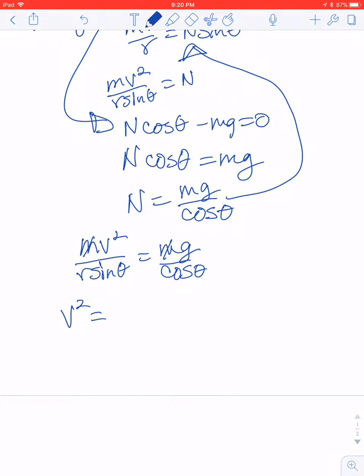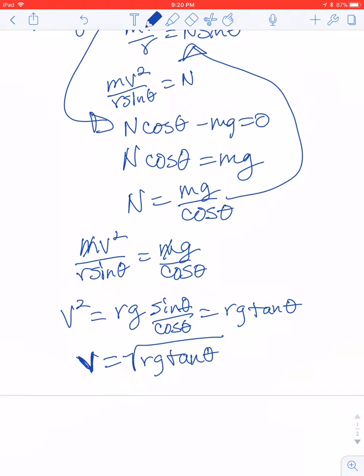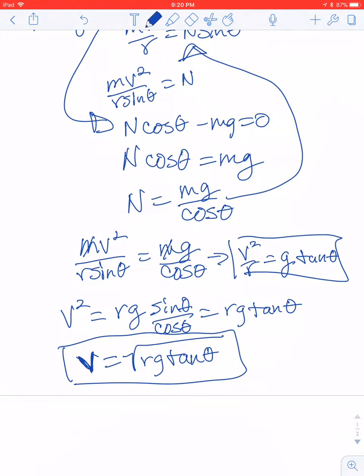So our goal here was to solve for V. So let's do some more algebra. V squared equals R times G times sine of theta over cosine of theta. So that is the same as RG times tangent of theta. So V, the safe speed that you can go if you don't have friction on a banked curve, is the square root of RG tan theta. The radius of the curve matters, the angle matters, but the mass of the car actually did not matter for a safe speed. You could also, at this step up here, this is V squared over R equals G times tan theta.